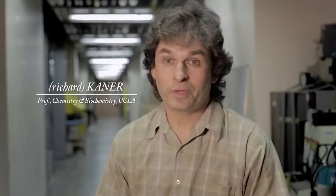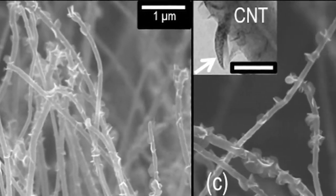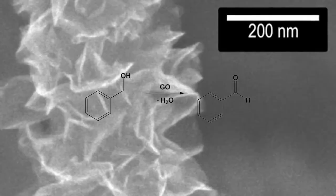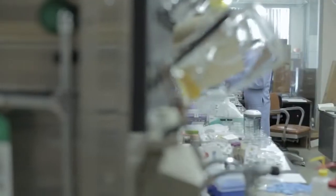Graphene is a single layer of carbon. It's one of the strongest materials ever known and it's completely flexible. The discoverers of graphene won the Nobel Prize in 2010. However, the method they used to make it—which was taking graphite and peeling it with scotch tape—is not practical. So we set out to find a better method.